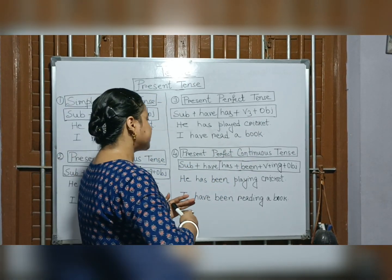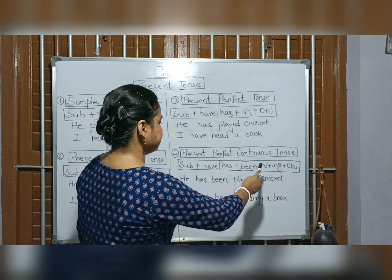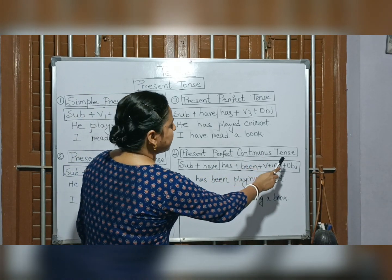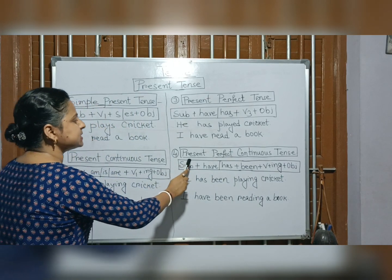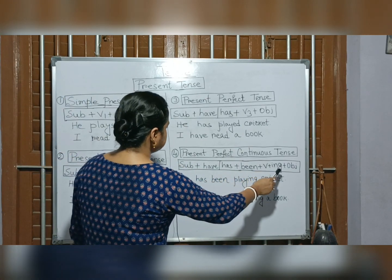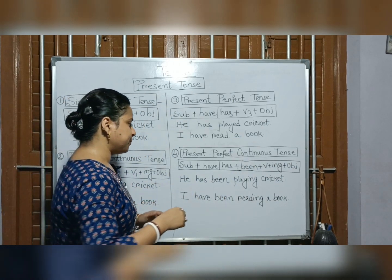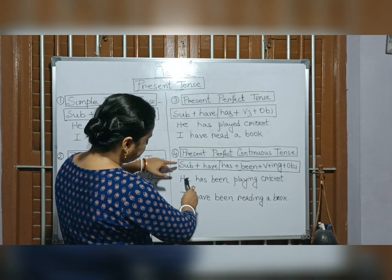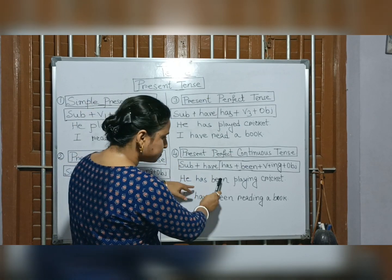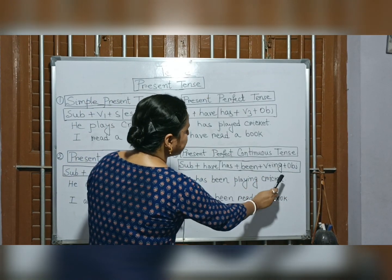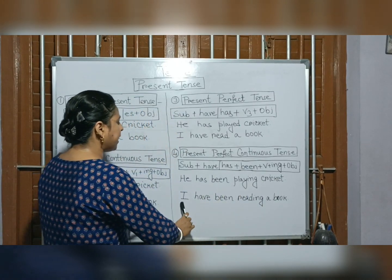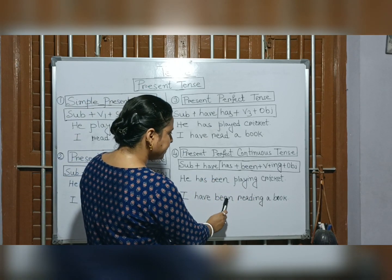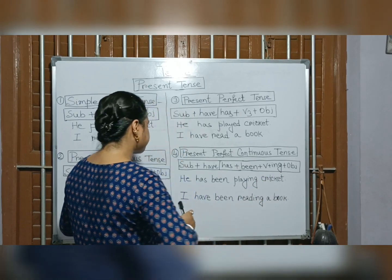For present perfect continuous tense, the structure is: subject plus have or has plus been plus V plus -ing plus object. Examples: 'He has been playing cricket' and 'I have been reading a book.'